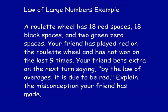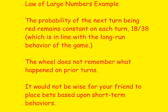Here is a common type of solution for this. The probability of the next turn being red remains constant with each turn — 18 out of 38 — which is in line with the long-run behavior of the game. Over many many trials it will approach 18 out of 38. Remember, the wheel does not remember what happened on the prior turns. Also, it would not be wise to place bets based upon short-term behavior. Just nine times in a row is not a long enough run to make predictions about the next outcome.